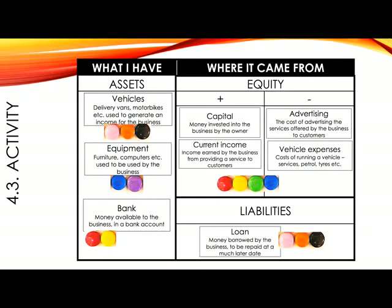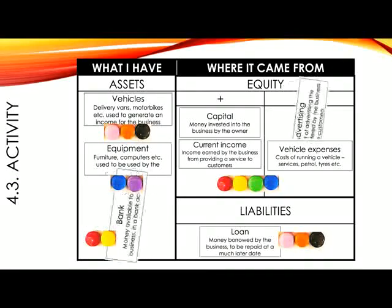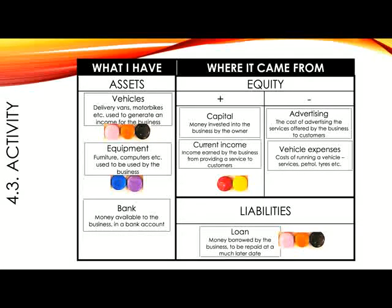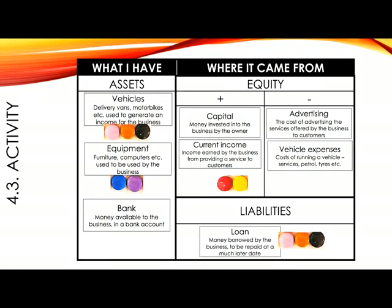Number five: paid two Smarties to advertise the courier service. This is very similar to the previous transaction. But in this case, the two accounts involved are bank and advertising for the advertisement that is placed. In exactly the same way as previously, bank will lose two Smarties, as will equity. Can you see that our equity is decreasing the more we spend money on expenses? The business is becoming poorer.